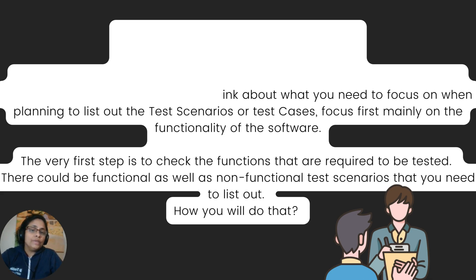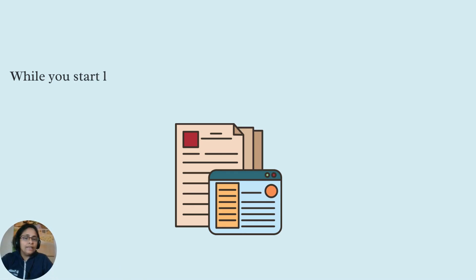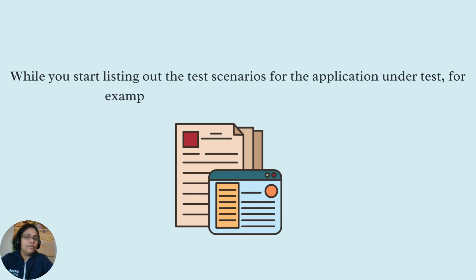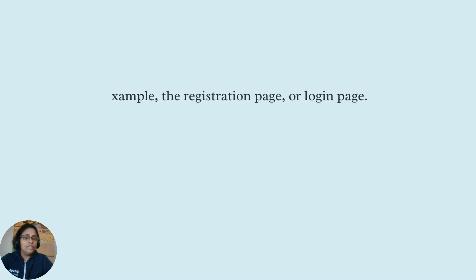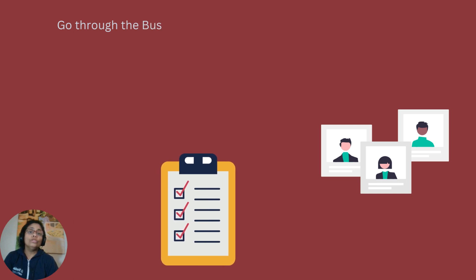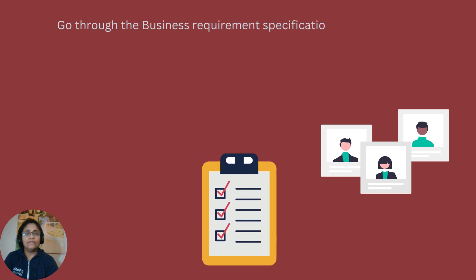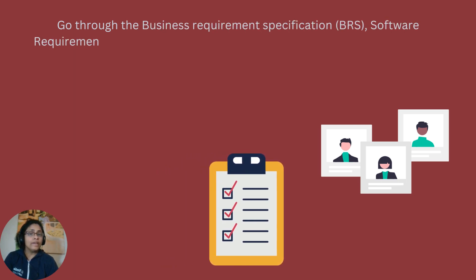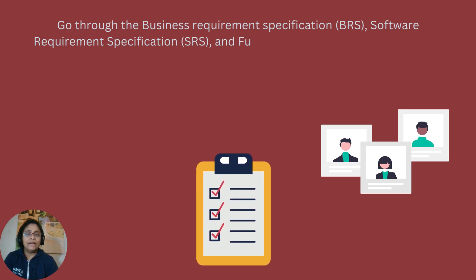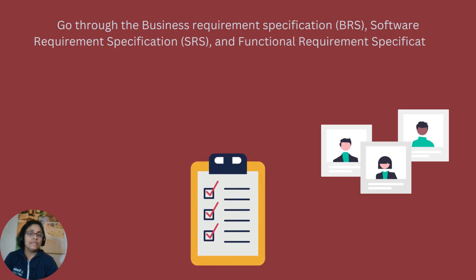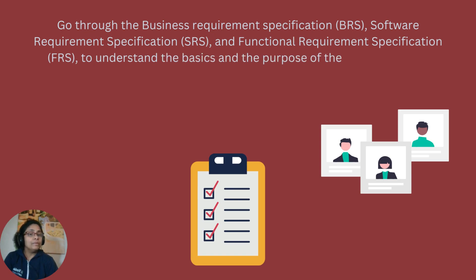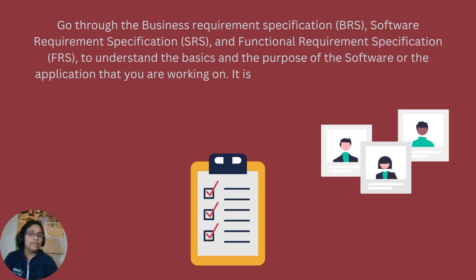How will you do that? While you start listing out the test scenarios for the application under test — for example, the registration page or login page — go through the business requirement specifications, software requirement specifications, and functional requirement specifications to understand the basics and the purpose of the software or application that you are working on.